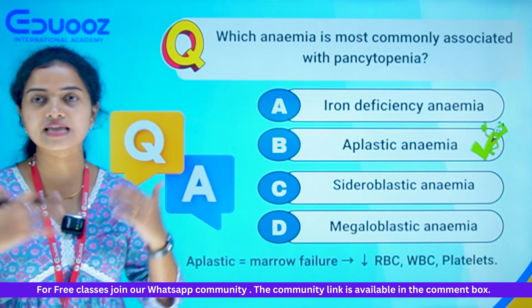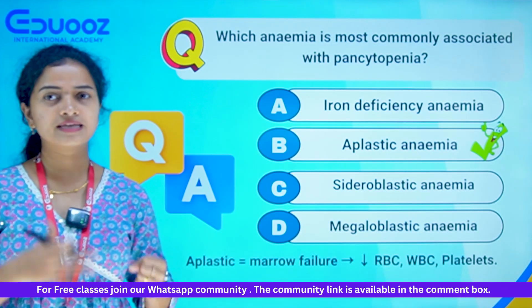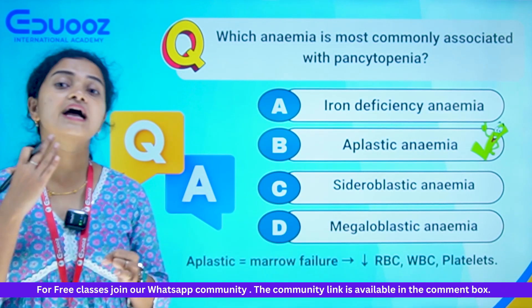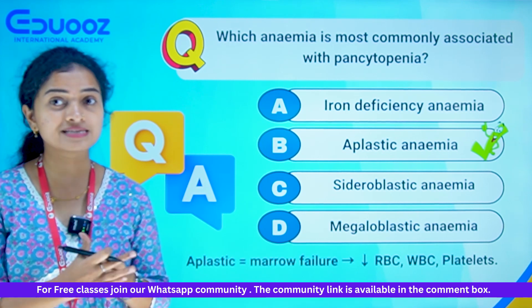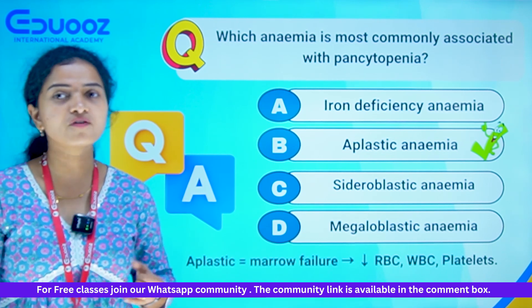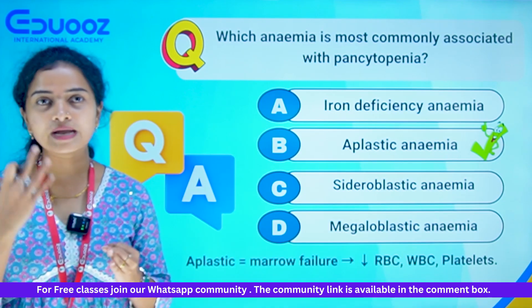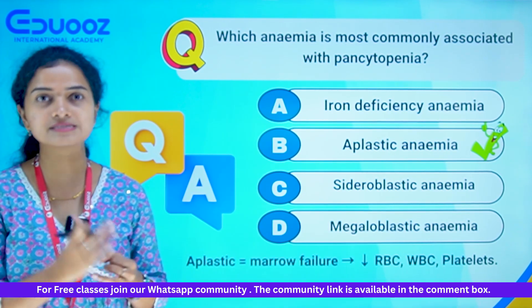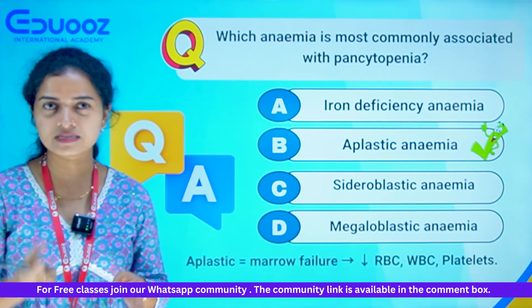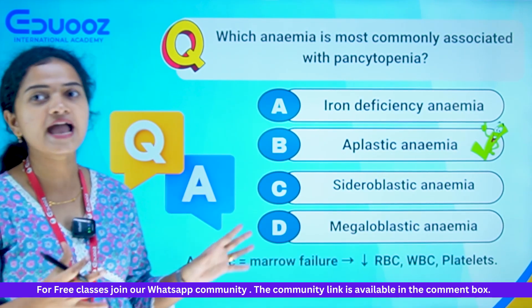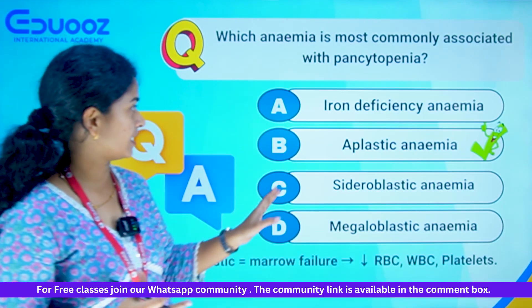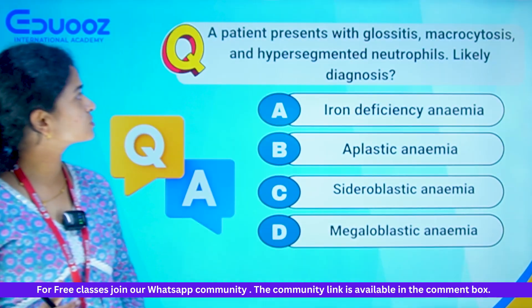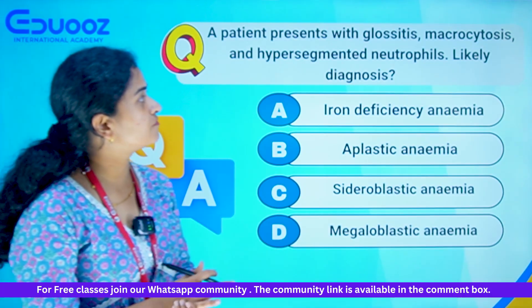In aplastic anemia there is decreased WBC, RBC, and platelets. If RBC decreases, we have anemia. If WBC decreases, we become prone to infections. If platelets decrease, we get bleeding disorders. So the answer is Aplastic Anemia.